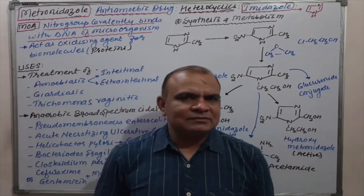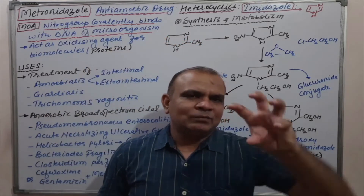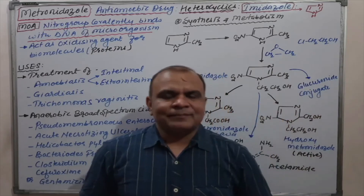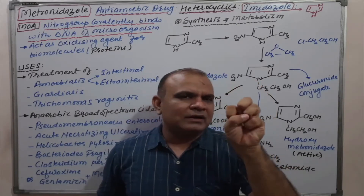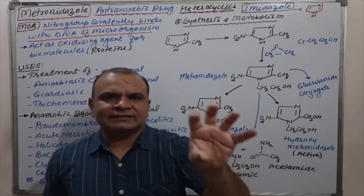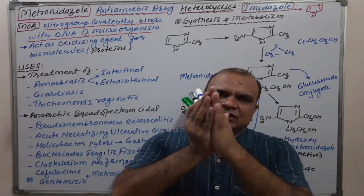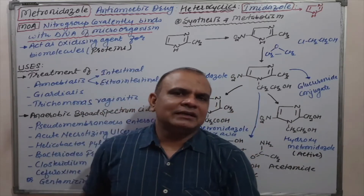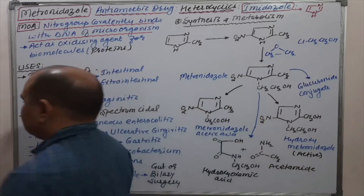Try to understand: if a person is controlled by the brain system, and the brain is controlled by something else, that person is totally under control. Similarly, the DNA of a particular microorganism is the controlling part which controls the whole activity of that microorganism. If the DNA is destructed by the nitro group via covalent bonding, the DNA can no longer function, and the microorganism will die.